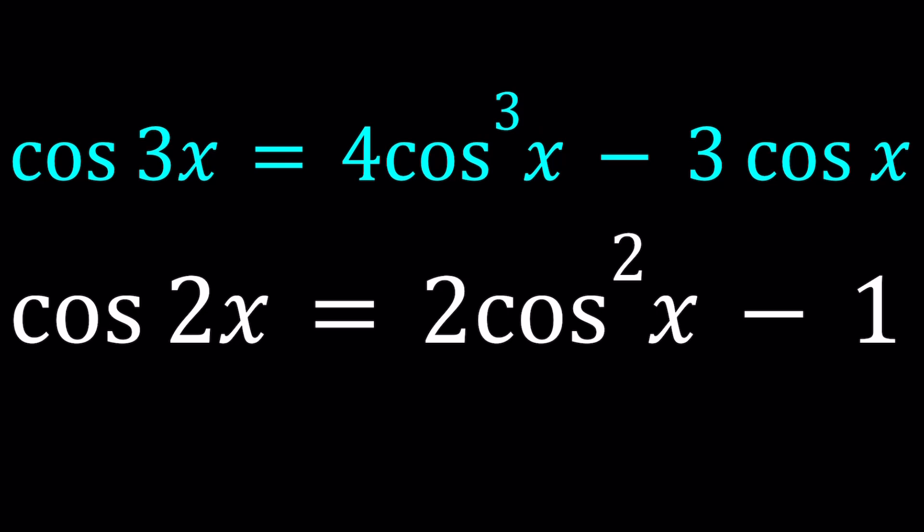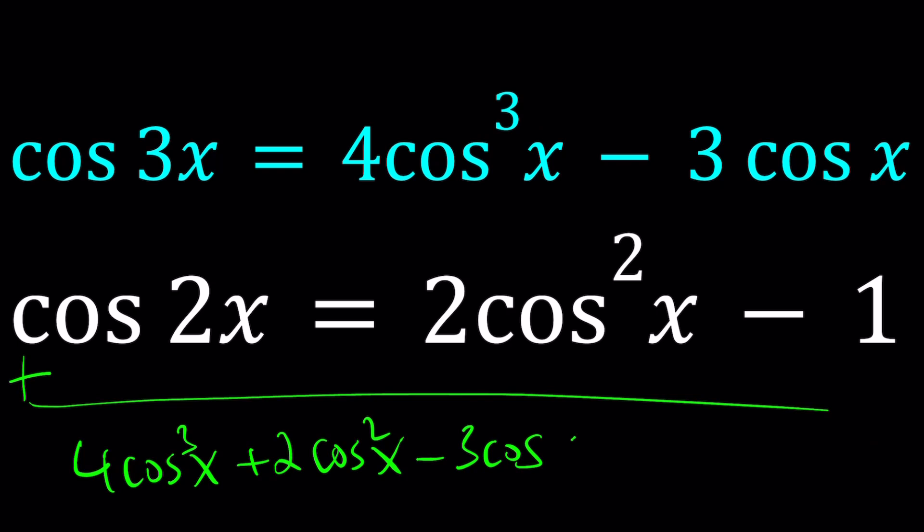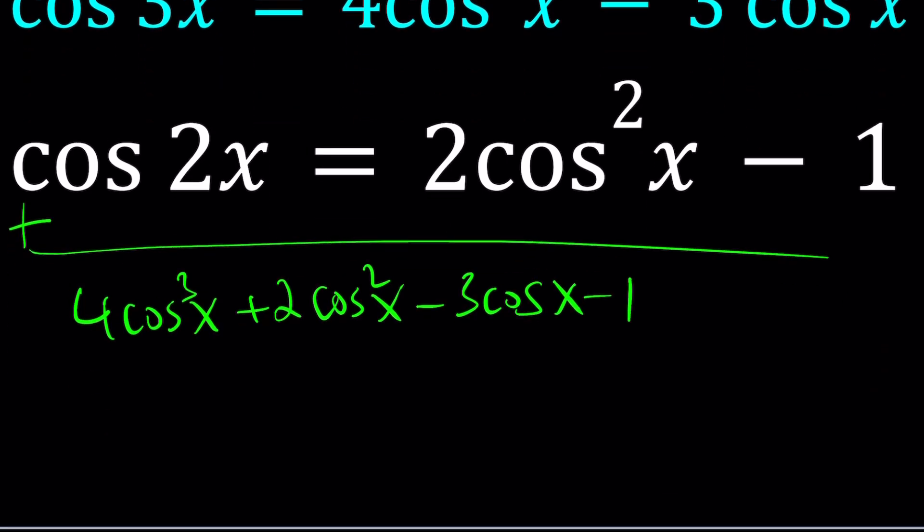So let's go ahead and add these up. And when we add these two equations we're going to get cosine 3x plus cosine 2x which is what we have on the left hand side. And that should equal 4 cosine cubed x plus 2 cosine squared x minus 3 cosine x minus 1. And as you know from our equation, this is equal to 3 minus cosine of x.